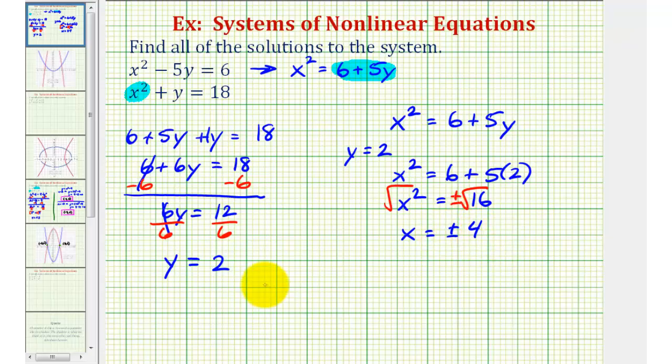So when y equals two, x can be either positive four or negative four. So we have two solutions.